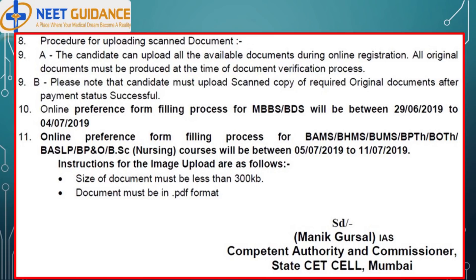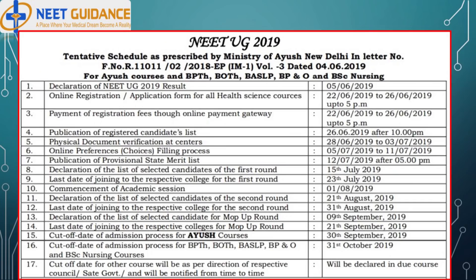Online preference form filling process for BAMS, BHMS, BUMS, BPTH, BOTH, BASLP, BP&O, and BSC nursing courses will be between 5th July 2019 to 11th July 2019. Instructions for image upload: size of document must be less than 300 KB and document must be in PDF format.